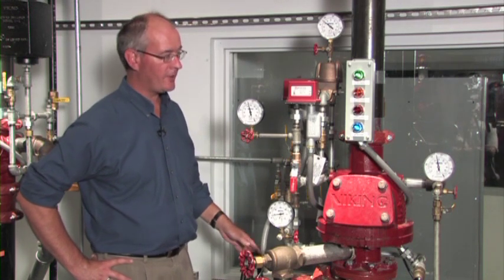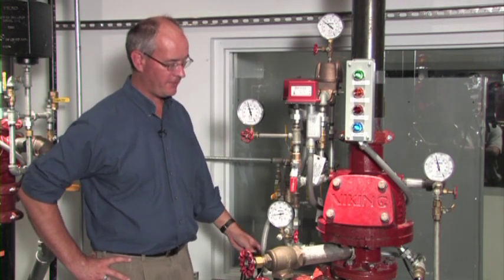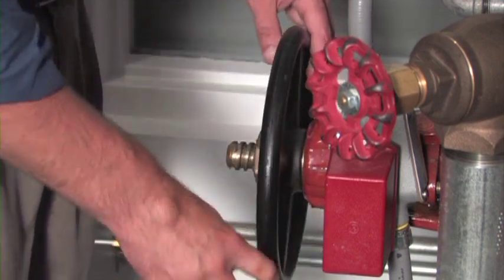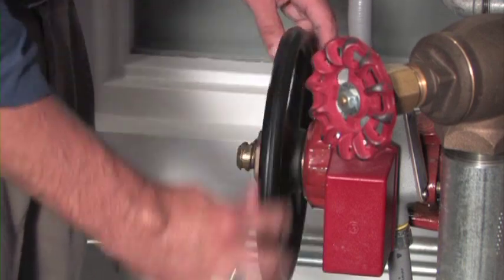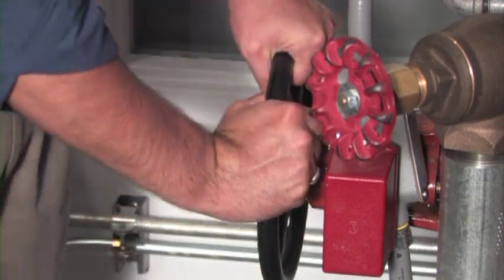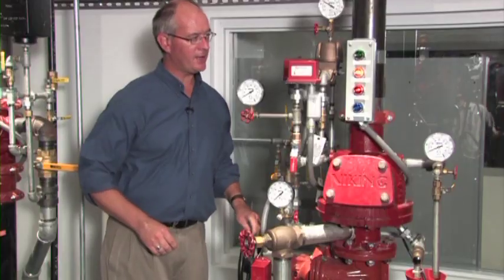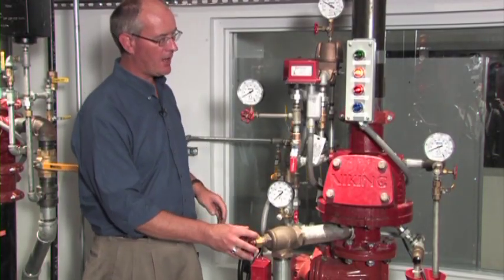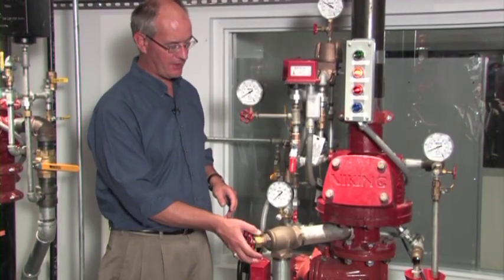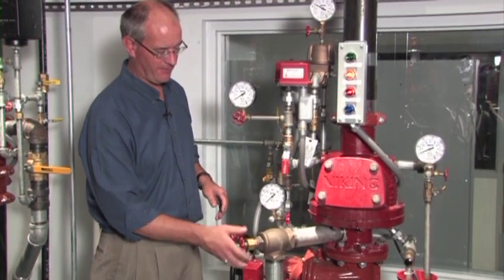To stop the water flow through the system, we need to close our control valve, our water supply control valve, and then drain our sprinkler riser. We drain the water from our sprinkler riser through the main drain on the base of the dry pipe valve.